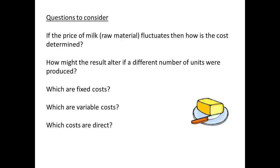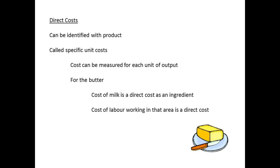It is usually not quite as simple. What happens if the prices of the raw materials alter during the period? What happens to cost per unit if different numbers of units are produced in the period? What are the fixed costs that can be identified? What are the variable costs? What are the direct costs? Direct costs are those that can be identified with the production of the units, and they are often called specific unit costs. It means that we can identify these costs and associate them only with the units being produced.